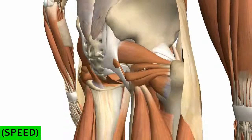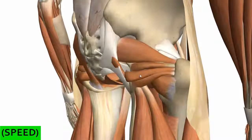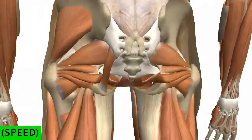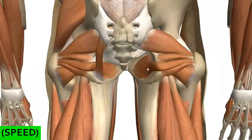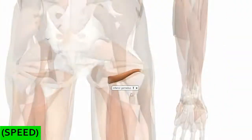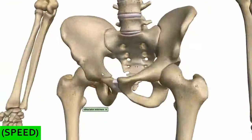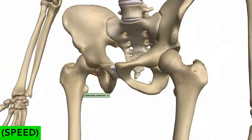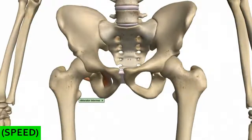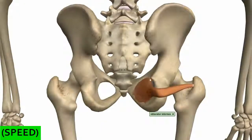Just below the piriformis muscle, you've got the gemellus superior, and the gemellus inferior below that. In between, you've got the obturator internus muscle. The obturator internus sits on the medial surface of the obturator membrane. On the lateral, external surface, you've got a muscle called the obturator externus, which I'll talk about shortly. The obturator internus lies on the medial or internal surface.